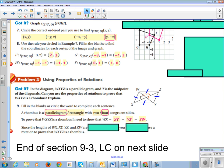Since the lengths of WX, XY, YZ, and ZW are unknown, you cannot use a rotation to prove that it is a rhombus. Rotations don't give you any information about the side lengths, so you cannot use them.